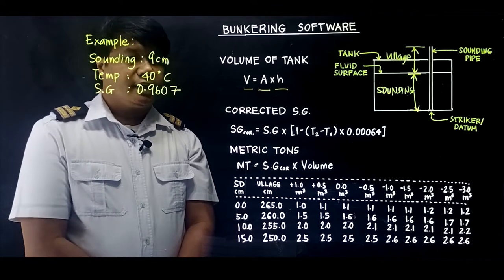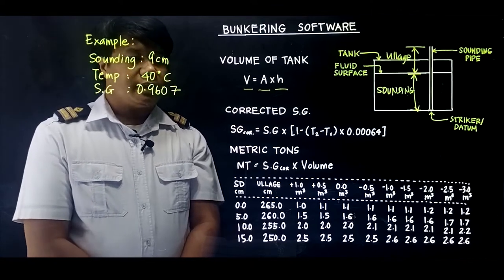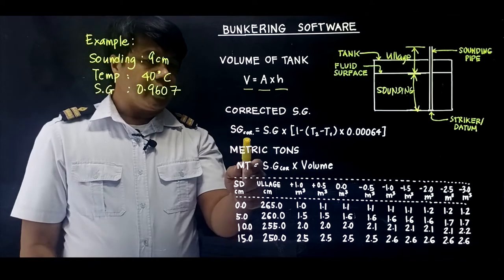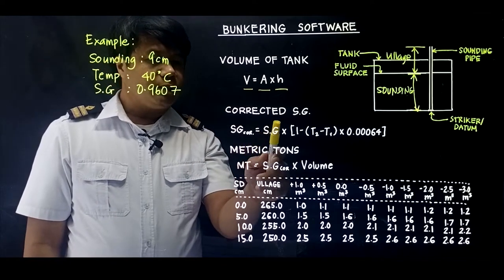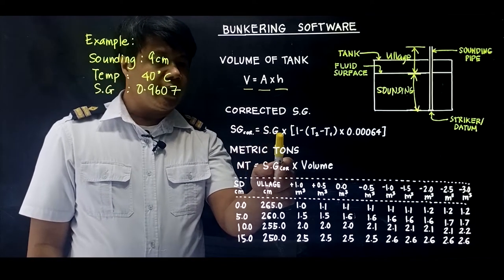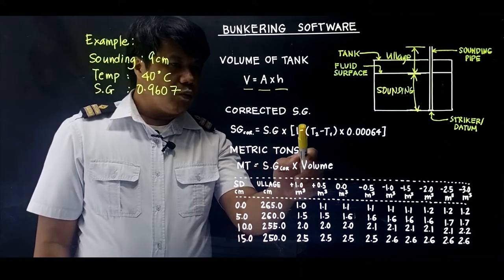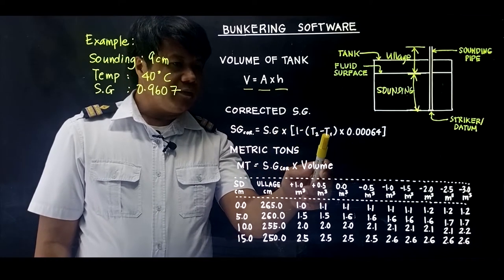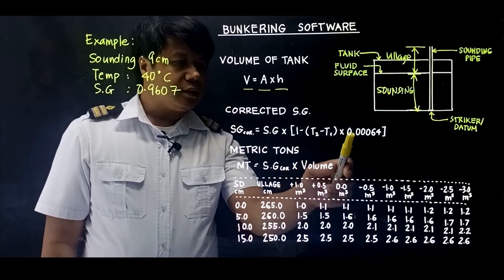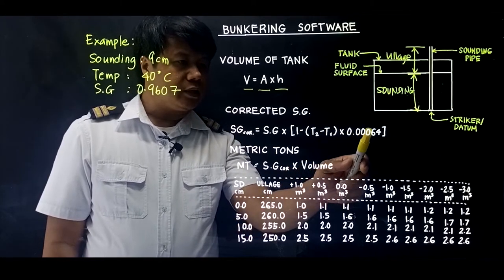So the first step is to solve for the corrected SG. The formula for corrected SG is SG corrected equals specific gravity at 15 degrees Celsius times quantity 1 minus the difference in temperature times 0.00064.